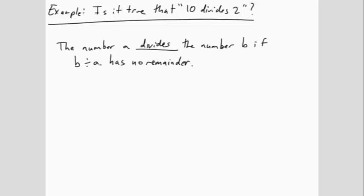Example: Is it true that 10 divides 2? Most likely, your immediate reflex is to answer yes. But let's take a closer look. We need to compare the statement with the definition. The number A divides the number B if B divided by A has no remainder. In this problem, the number A is 10 and the number B is 2.